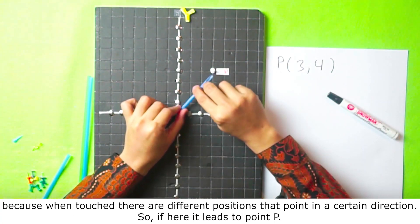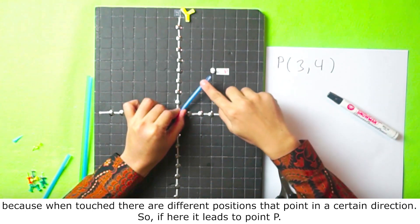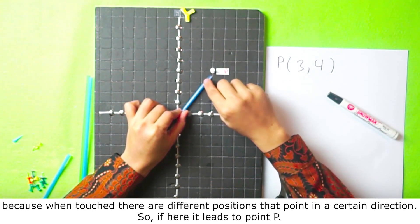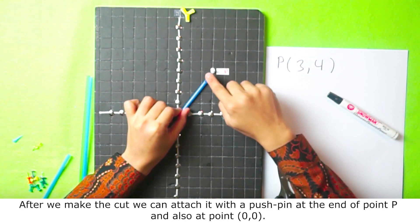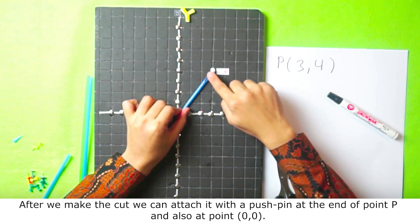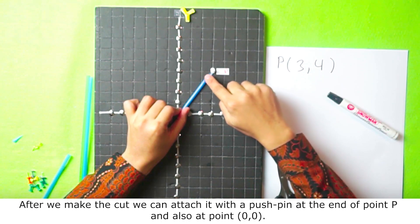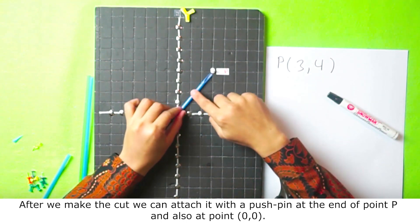Because when it touches, there are different positions that point in a certain direction. If here it leads to point P, after we make the cut, we can attach it with a pushpin at the end of point P and also at point 0, 0.